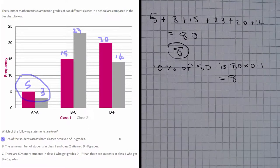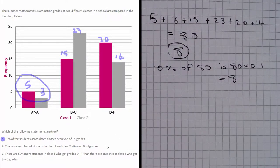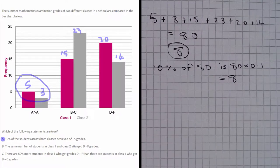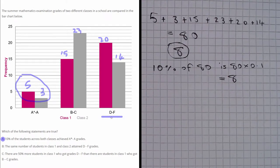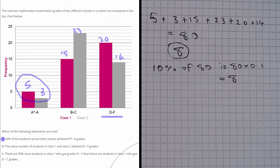Let's have a look at part B. This says the same number of students in class 1 and class 2 attained D to F grades. Well this one's quite straightforward. We can have a look at the D to F bars here and we can see they're not the same height. We have 20 people in class 1 and 14 in class 2. So this is false.